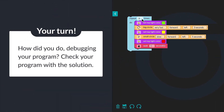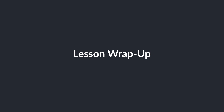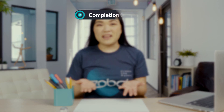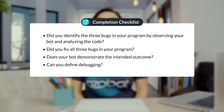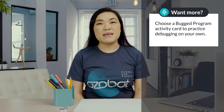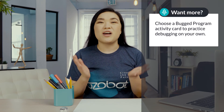How did you do debugging your program? Check your program with the solution. Did you identify the three bugs in your program by observing your bot and analyzing the code? Did you fix all three bugs? Does your bot demonstrate the intended outcome? Can you define debugging? If you're looking for more to do, you can choose a bugged program activity card to practice debugging on your own. Come back again soon for our next lesson.